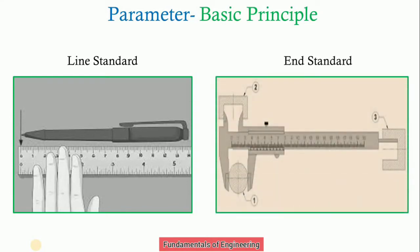End standard: the principle is that when the length being measured is expressed as the distance between two parallel faces, then it is called end standard. By this diagram you can see if you are measuring the distance between two engraved lines, that comes under line standard. If you are measuring the distance of any object or length of any object between two parallel flat faces, then that comes under end standard instrument.